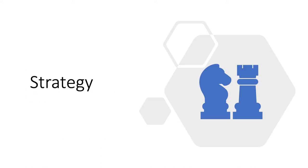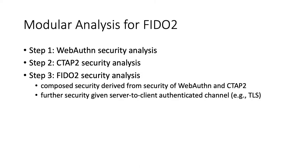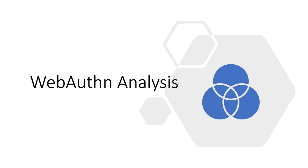Before going into the details of our analysis, let's see a little bit about our strategy. We analyze the FIDO2 protocol in a modular way — we first analyze the components, and then get the final overall security of FIDO2 from the composition result. We also discuss what security can be achieved if we have a server-to-client authentication channel like a TLS channel. Now let's first start with WebAuthn, the first component. We already know that WebAuthn authenticates a token with a challenge-response protocol.